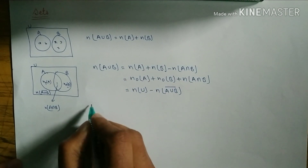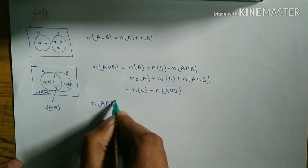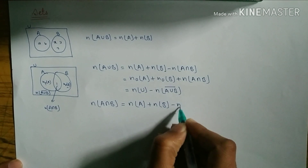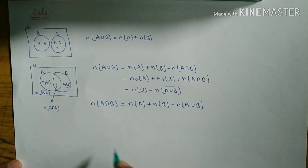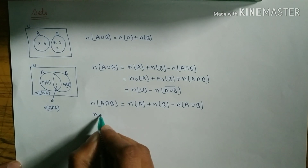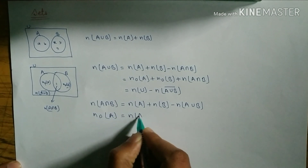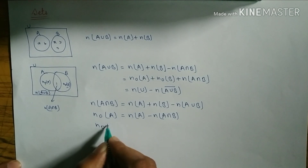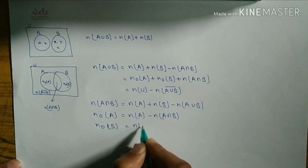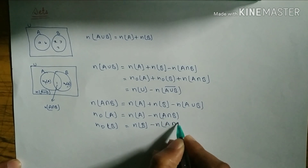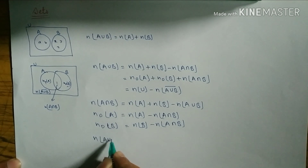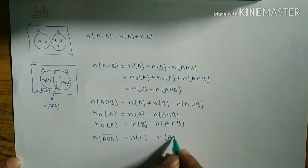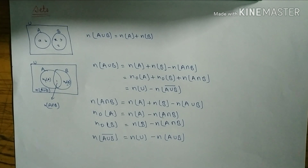Similarly, other formulas: the formula of n(A∩B) is equal to n(A) plus n(B) minus n(A∪B). The formula of n(only A) is n(A) minus n(A∩B). The formula of n(only B) is n(B) minus n(A∩B). The formula of n(A∪B)' is n(U) minus n(A∪B). These formulas are very important for class 8, 9, and 10.